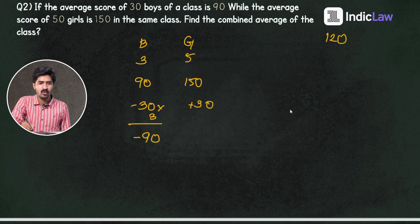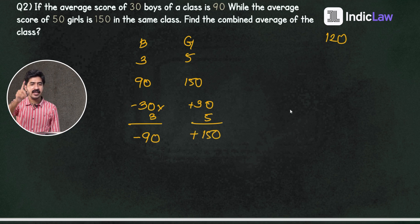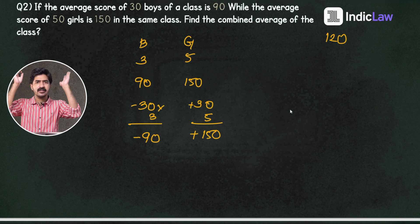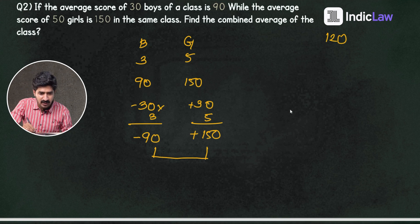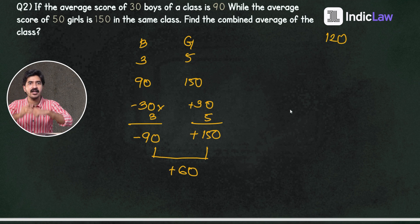Plus 30 girls. How many girls? There are 50 girls. So we have to add that. We have to mix up the boys and girls. Plus 150 minus 90 is equal to 60. The result is plus 60. When we assume the average, it is approximately a plus sign.